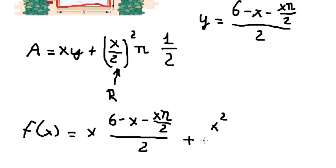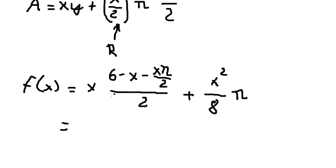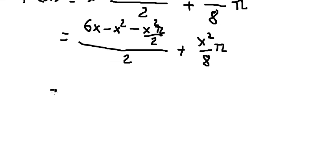Now we have the area function f(s). So s multiplied by six minus s and s gives us six s minus s squared pi, minus s squared pi over four. Dividing six by two gives us three, so we have three s minus s squared pi over four.